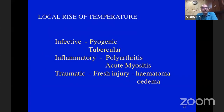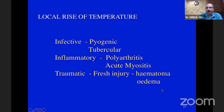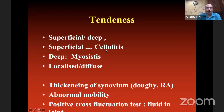For local rise of temperature: infective pyogenic conditions are completely warm; tuberculosis may have a slight rise. Inflammatory arthritis like polyarthritis or acute myositis can have local rise of temperature, and tumour conditions or acute traumatic injury like hematoma or edema can also cause some local rise, though not as in pyogenic arthritis. Tenderness can be superficial — generally cellulitis — or deep, suggesting myositis or arthritis.